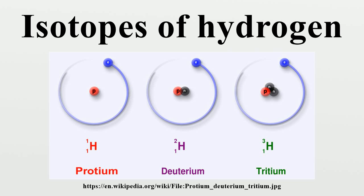The ordinary isotope of hydrogen, with no neutrons, is sometimes called protium. Hydrogen-1 (1H) is the most common hydrogen isotope with an abundance of more than 99.98%. Because the nucleus of this isotope consists of only a single proton, it is given the descriptive but rarely used formal name protium. The proton has never been observed to decay, and hydrogen-1 is therefore considered a stable isotope.